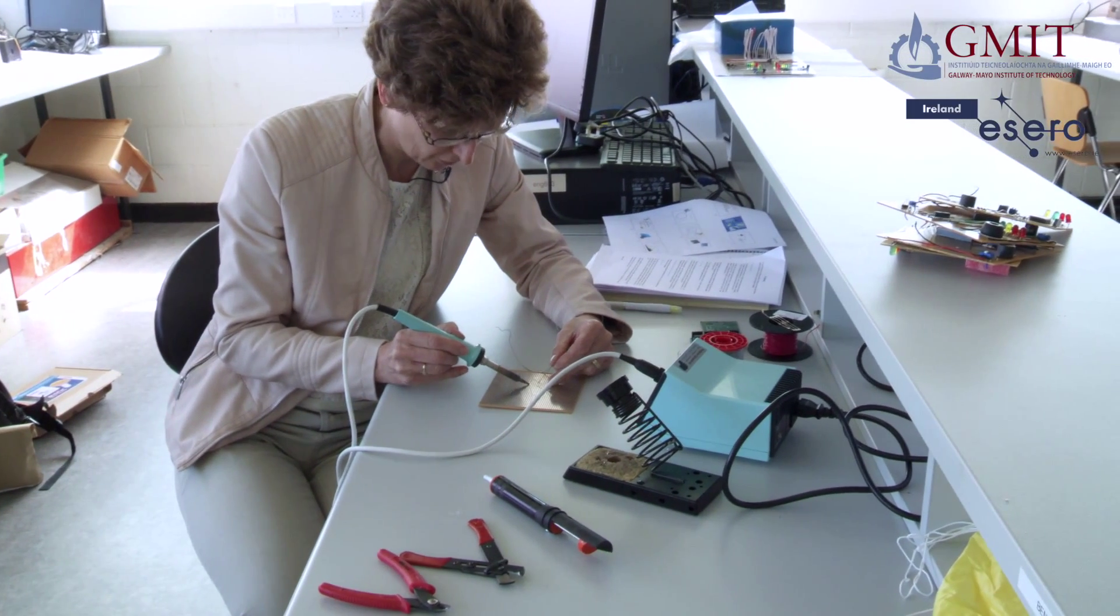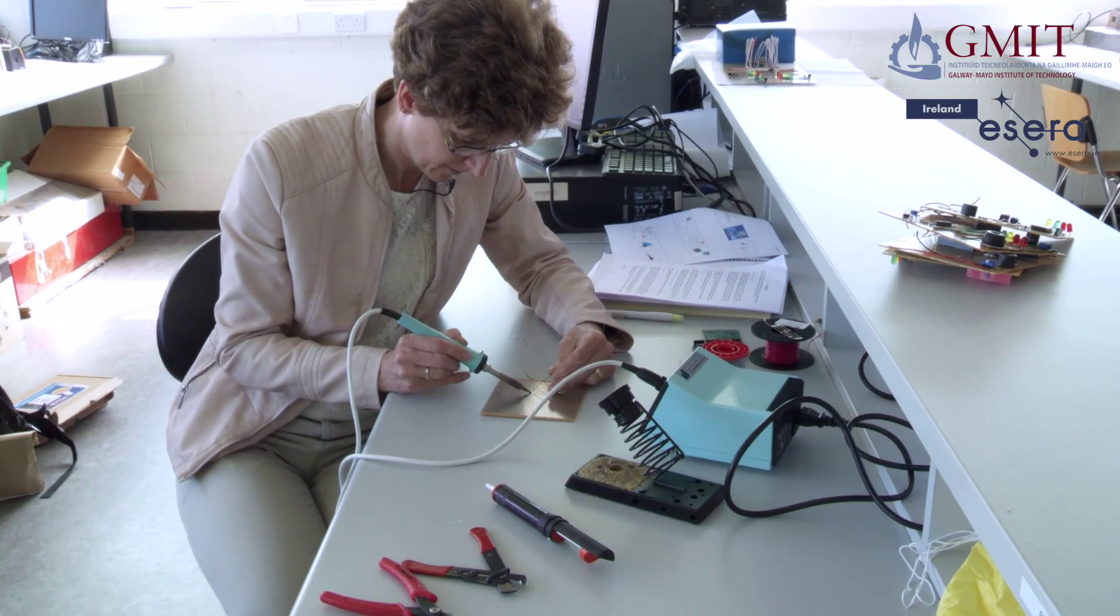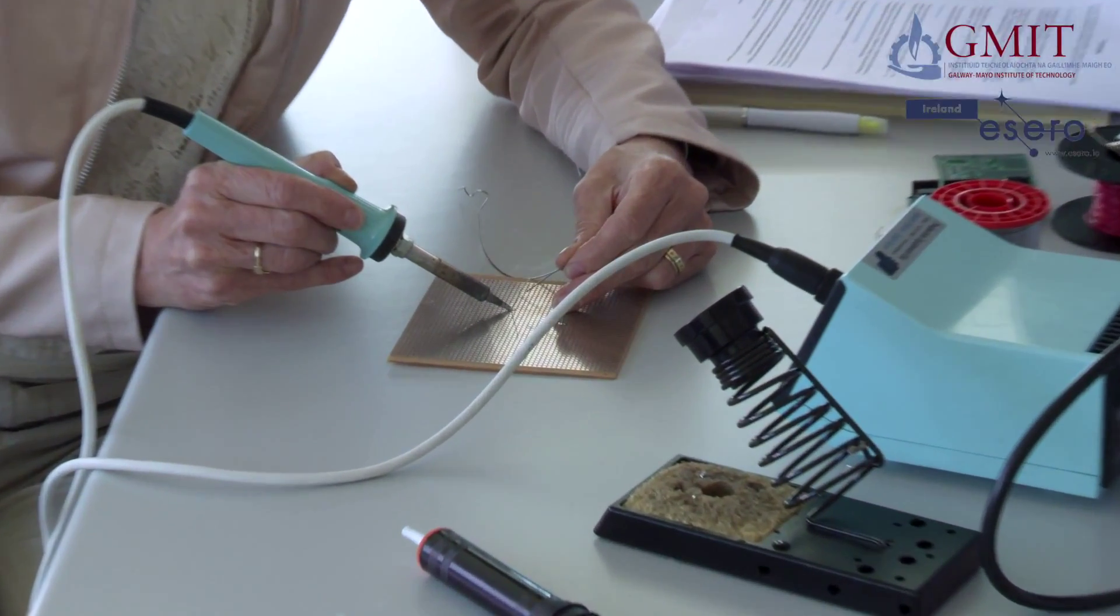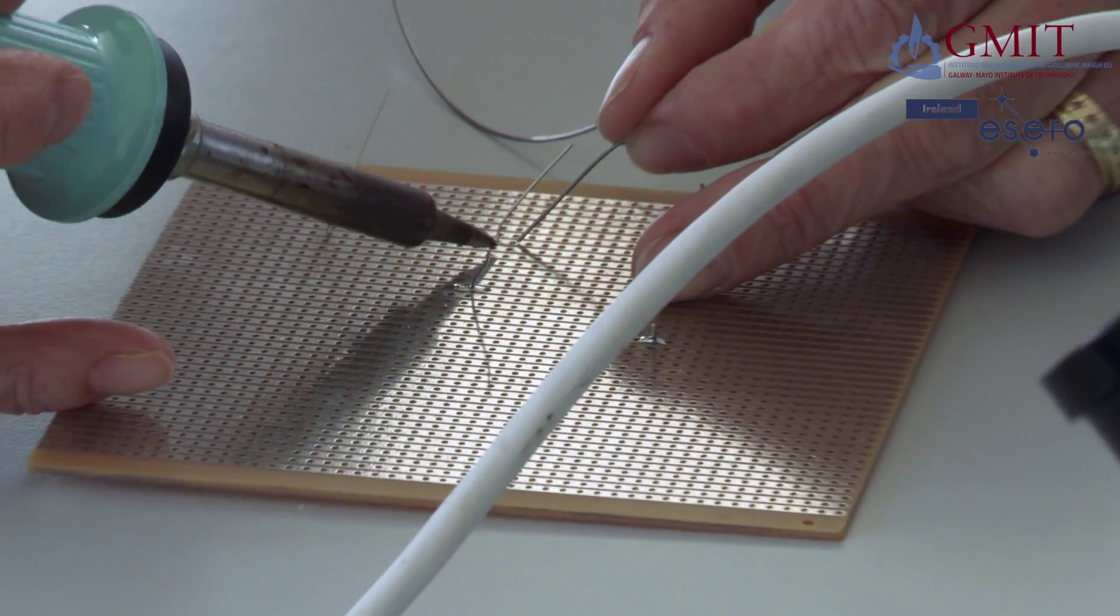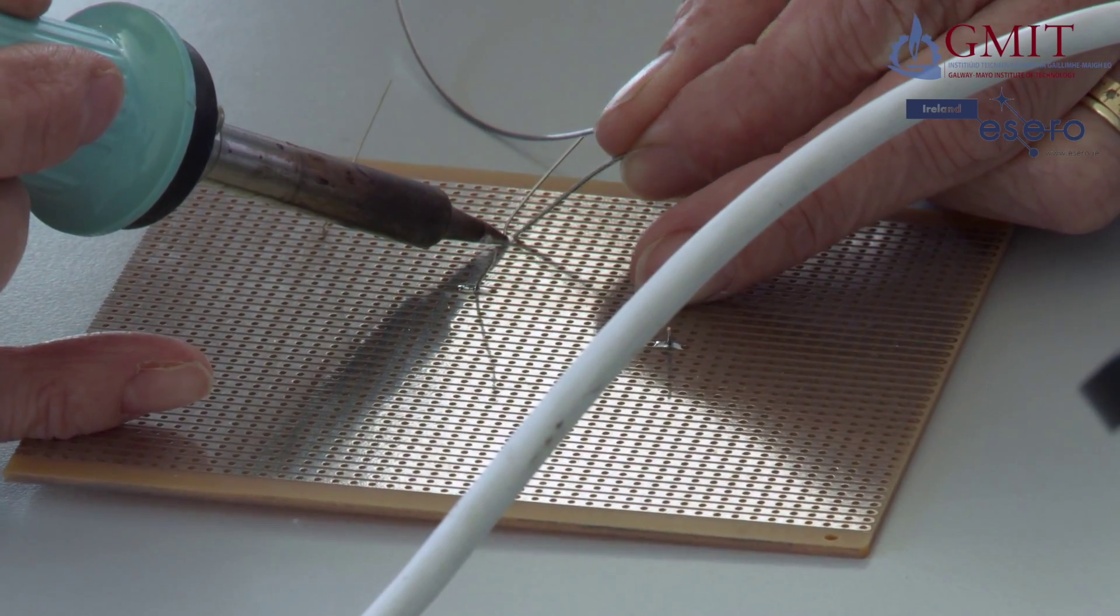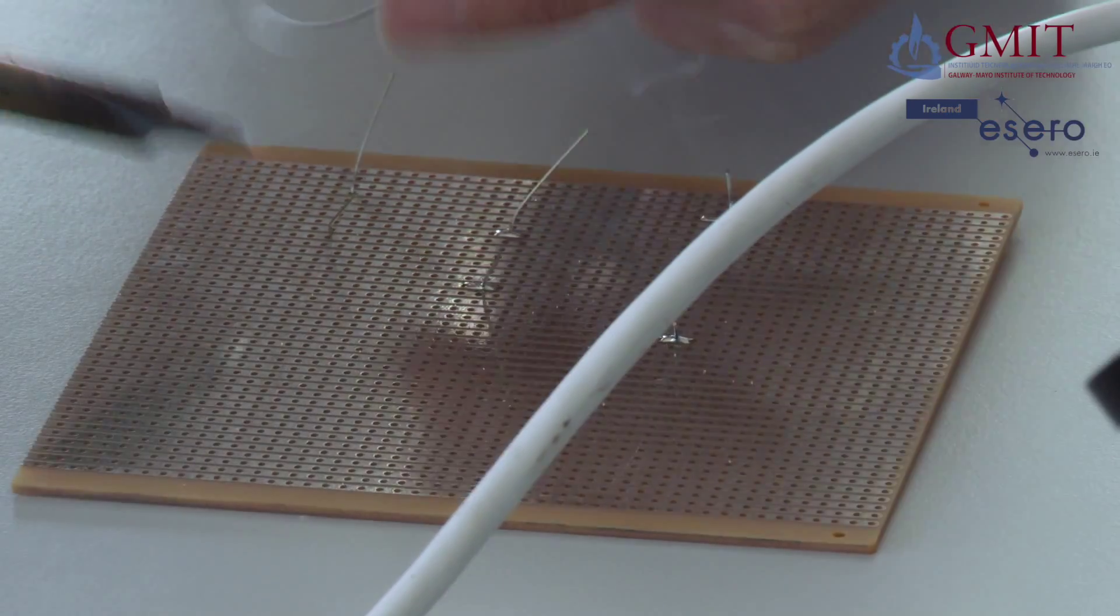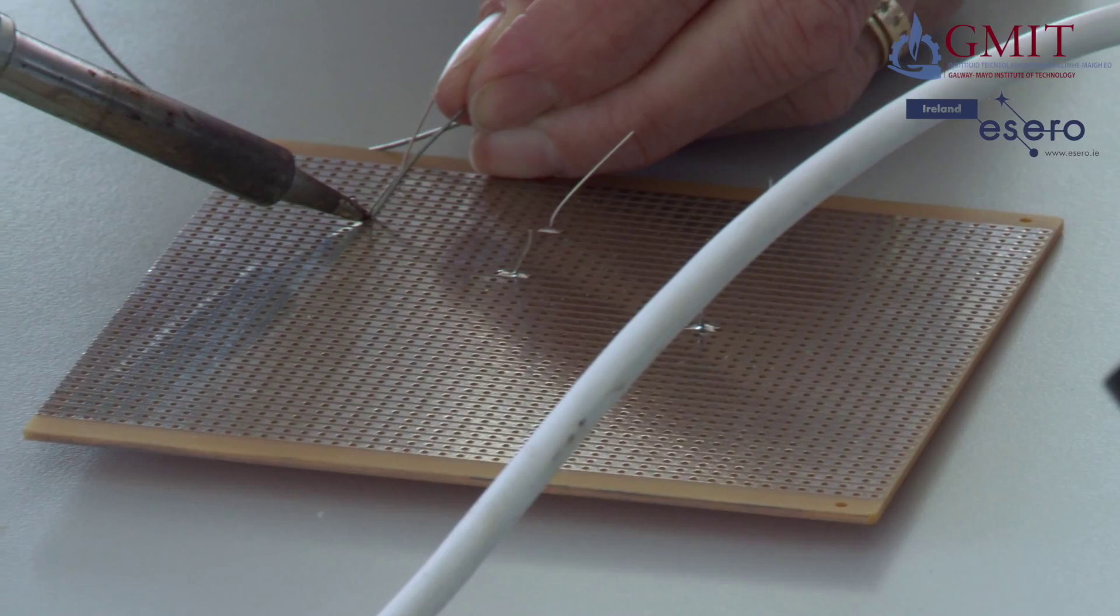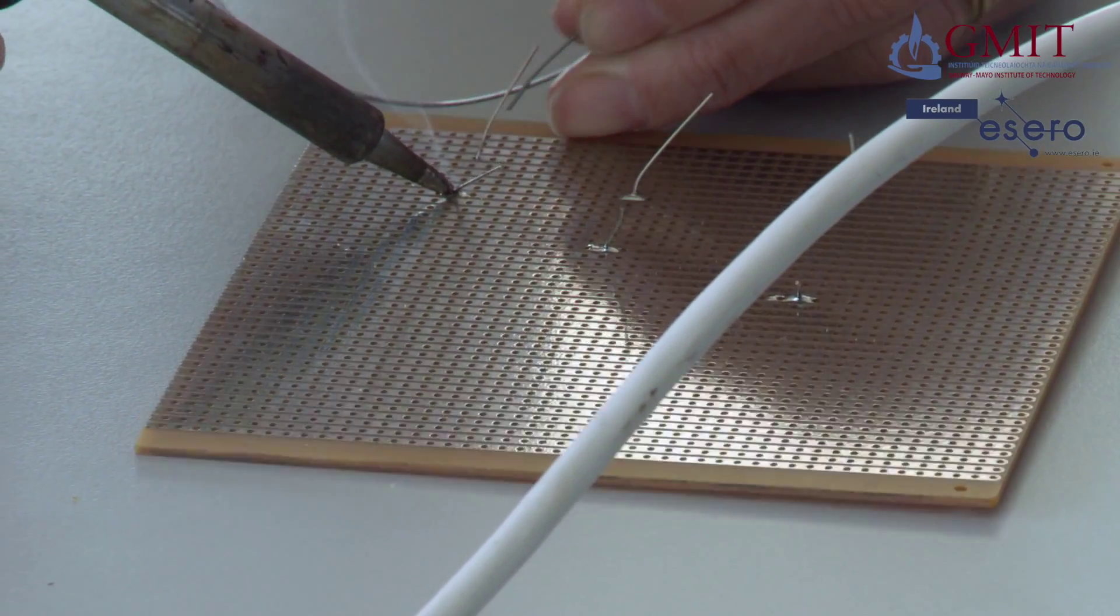So heat it up. Make sure it's in contact with both. And remove it. So the most likely cause of having bad joints with soldering is not having the two surfaces hot enough. Because the solder does two jobs. It serves to give electrical conductivity and it also physically holds the component in place.